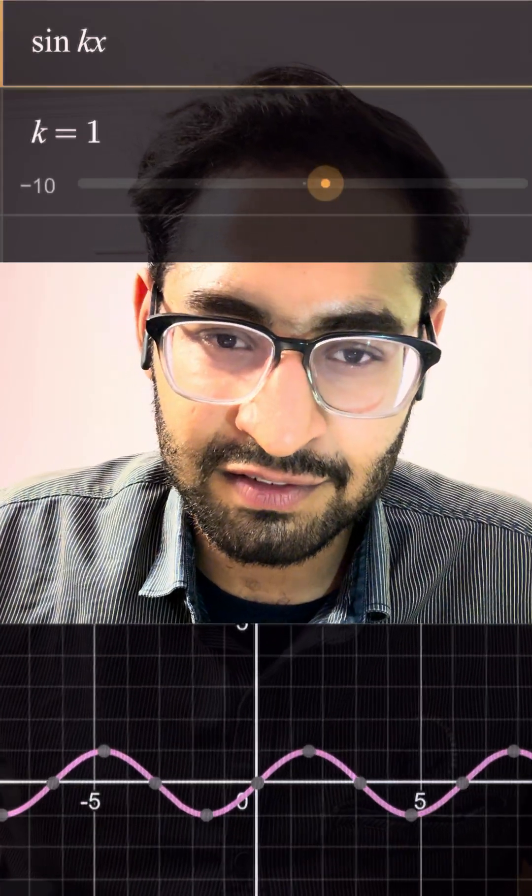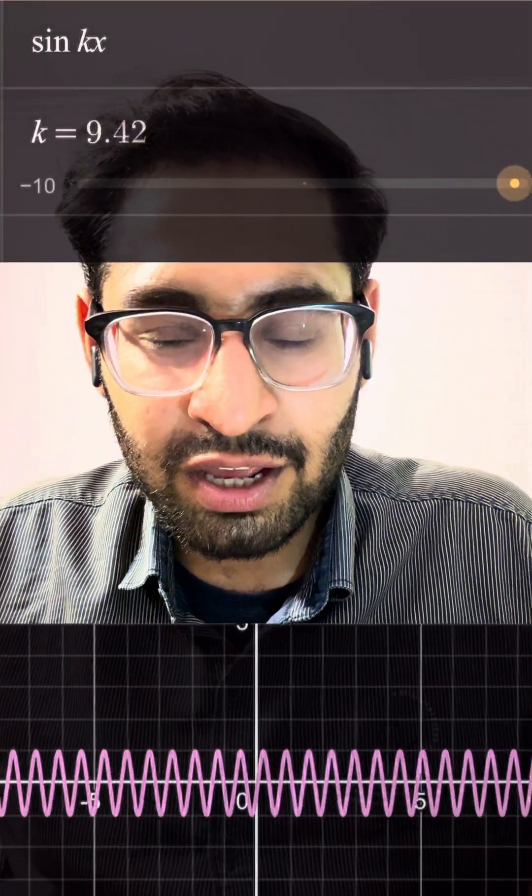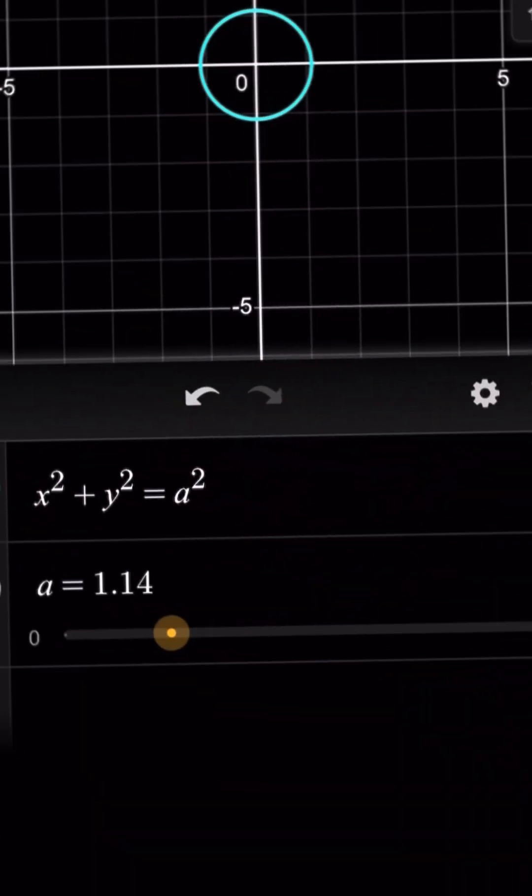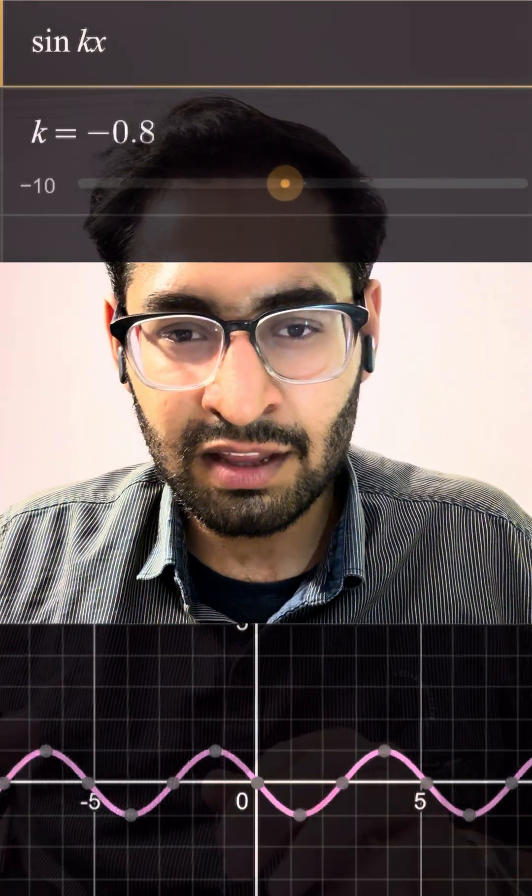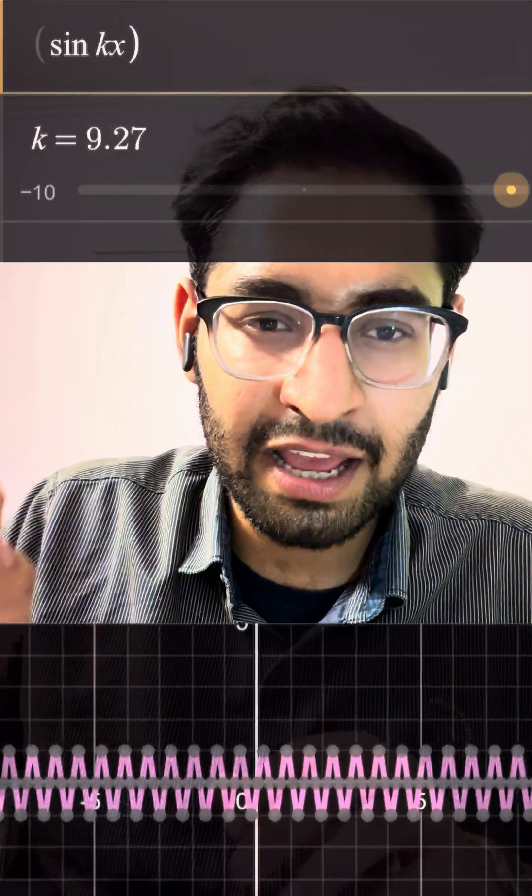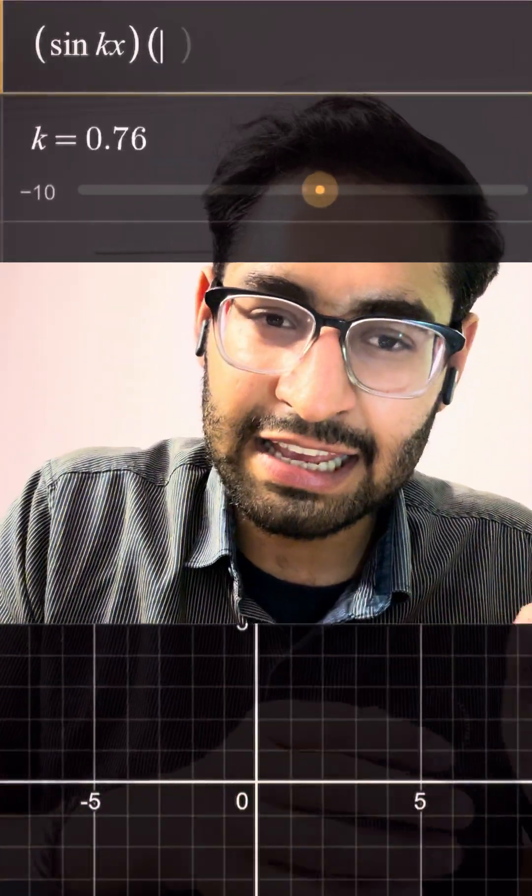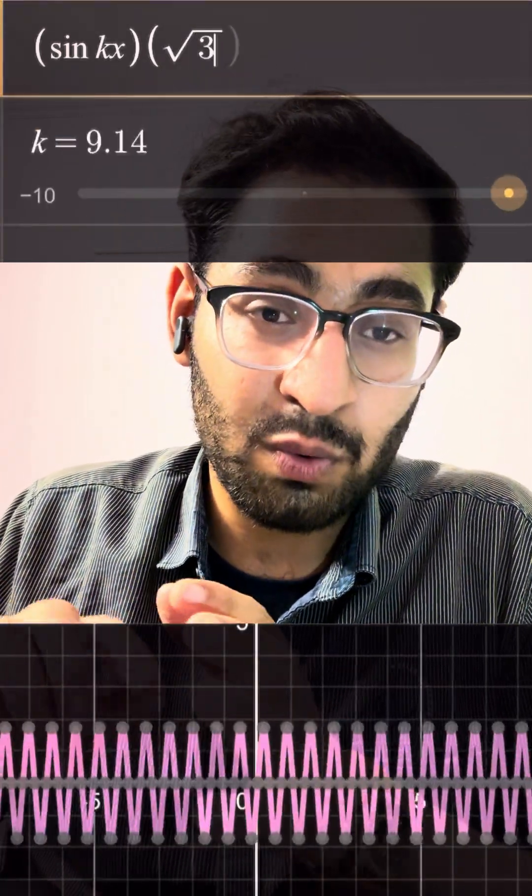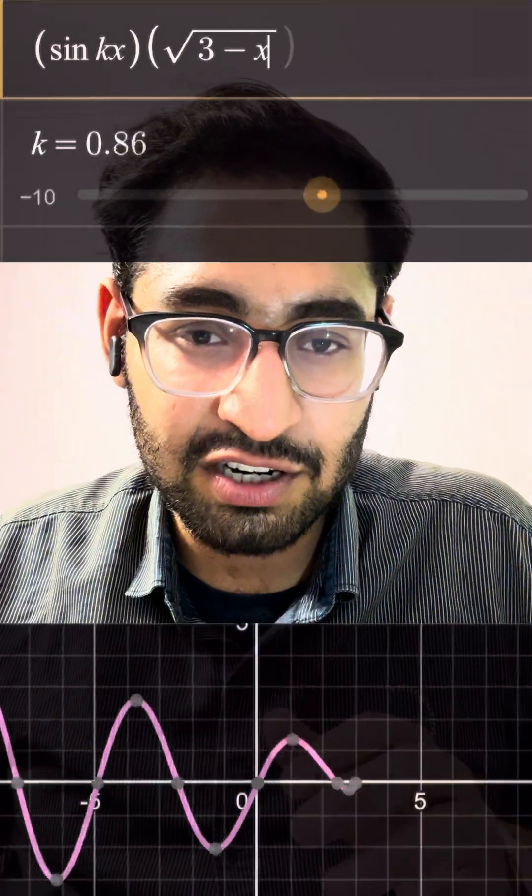Talking about an equation of a circle - the circle equation is x² + y² = a². Taking one of those and multiplying it with sine kx, I can write sin(kx) × √(3 - x²). √(3 - x²) was actually the equation of a semicircle, and then I multiplied both of them.